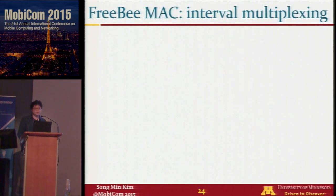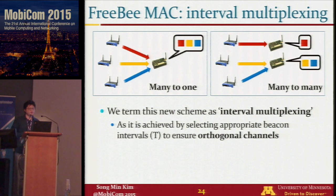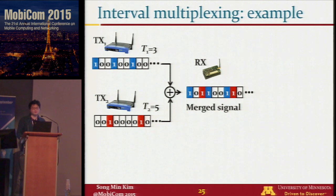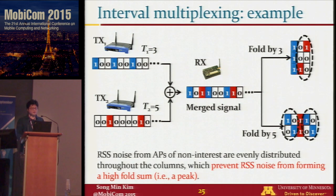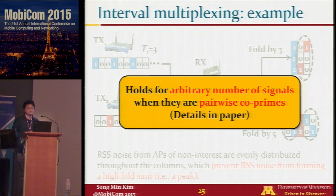Moving on to the MAC — Freebie MAC allows many-to-one or many-to-many concurrent transmissions. We term this new scheme interval multiplexing, achieved by selecting appropriate beacon intervals to ensure orthogonal channels between Freebie signals. For example, two senders with intervals three and five transmit concurrently. The merged signal, when folded with each respective interval, returns the corresponding beacon position, while RSS from non-interest APs is evenly distributed, avoiding symbol errors. This holds for any number of signals as long as their intervals are pairwise coprimes.